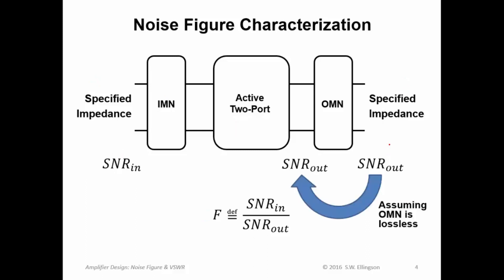Now, the first thing to realize is that if the OMN is lossless, which will be the case if we have ideal capacitors, ideal inductors, ideal stub matches, then the signal-noise ratio that we realize here will be the same as the signal-noise ratio we realize here. If there is no loss here, then there is no degradation of signal-noise ratio, and therefore the OMN does not really need to be considered.